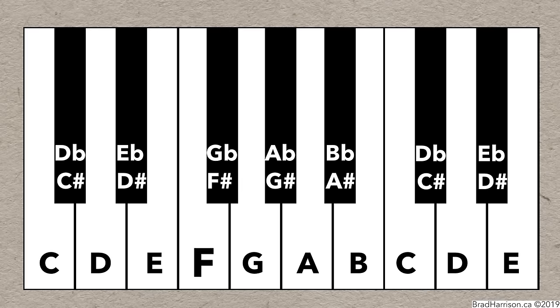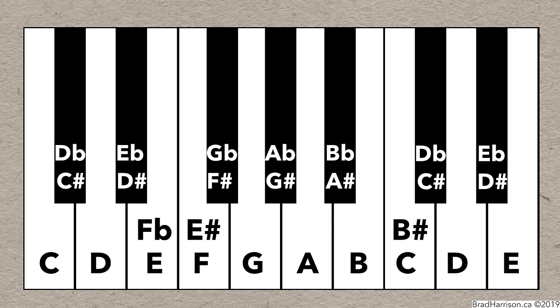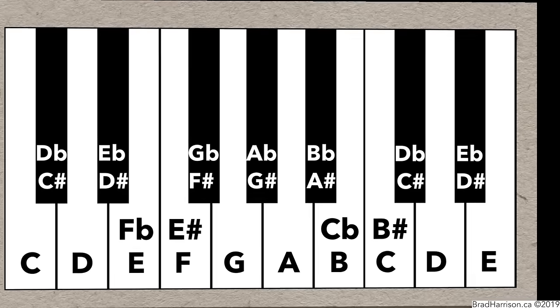Some of the white notes have two names, too. For instance, this note is F, but it's also possible to call it E sharp because it's up a semitone from E. And this note is E, but it's sometimes called F flat because it's a semitone below F. Same for C, also known as B sharp, and B, also known as C flat. And that's how to name every note on the piano.